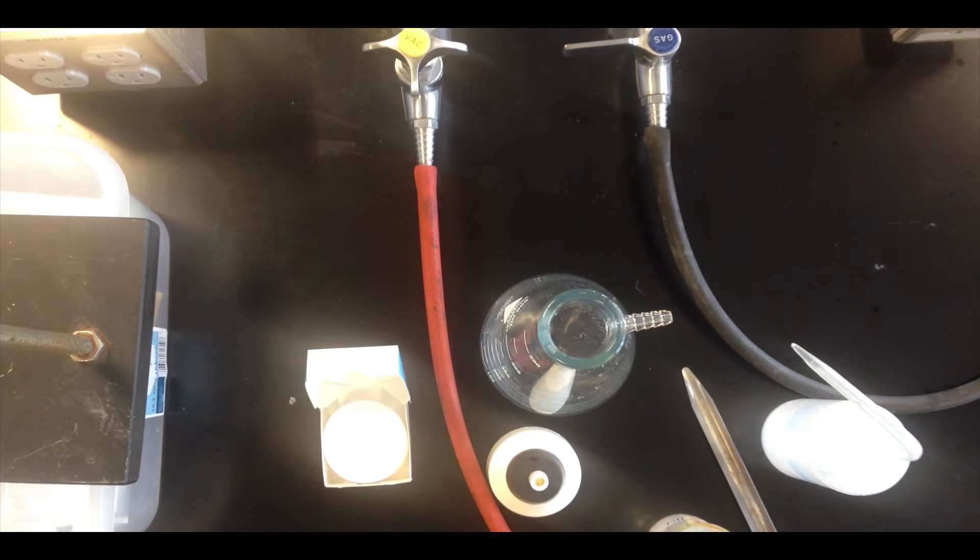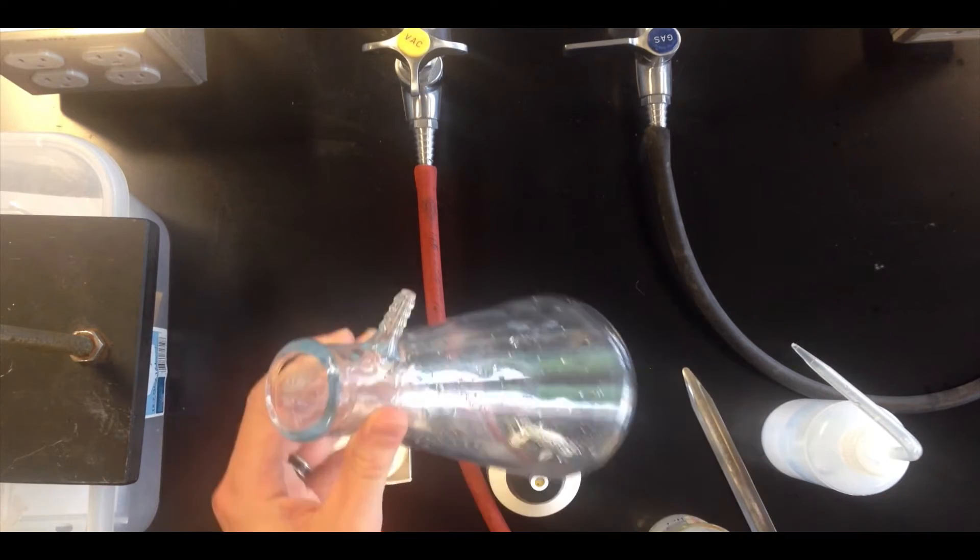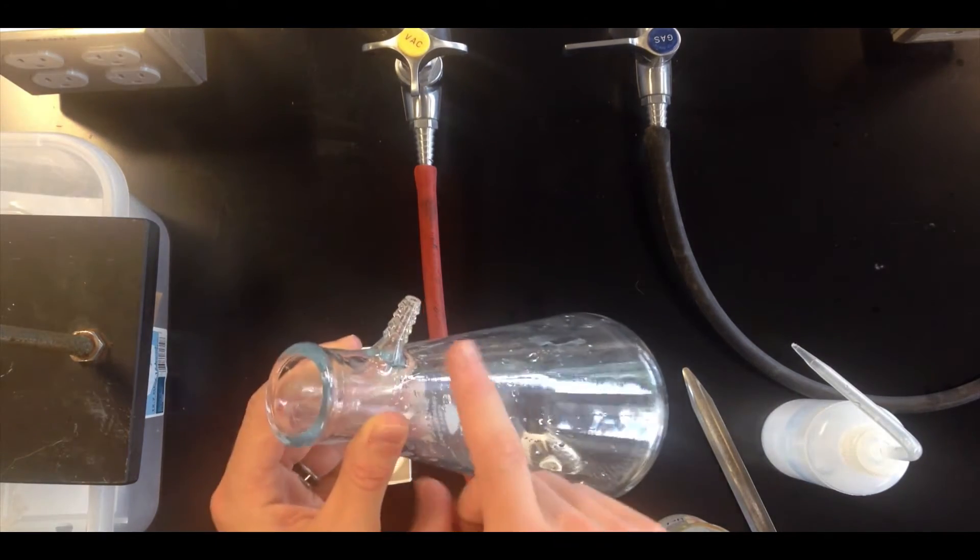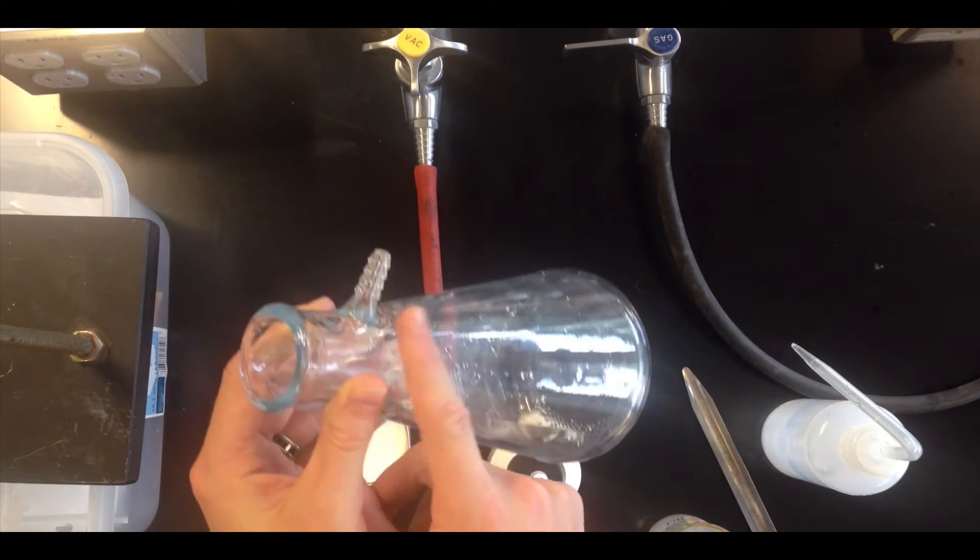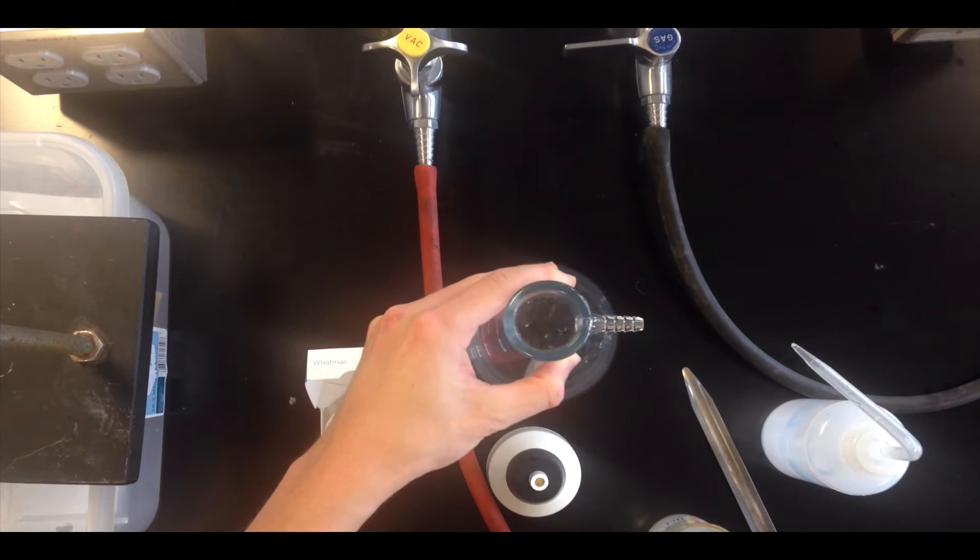there are at least three things that we absolutely need. The first is a flask that looks like an Erlenmeyer flask but has a little sidebar at the top, this barbed tube up near the top of the flask. This is what's called a filter flask, and that barb, as we'll see in a second, is essential for obtaining the vacuum effect that's characteristic of vacuum filtration.